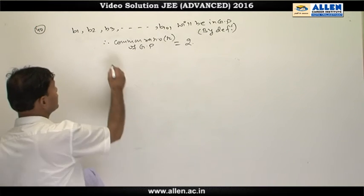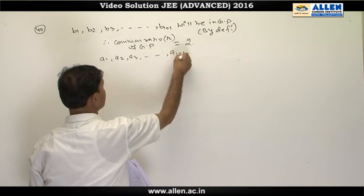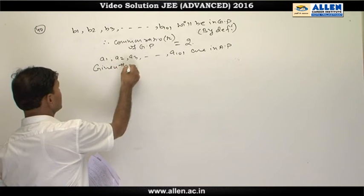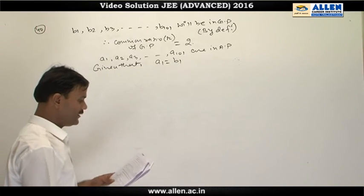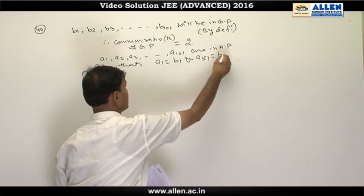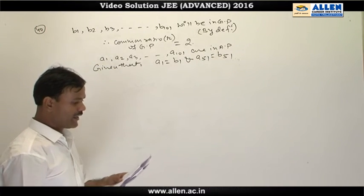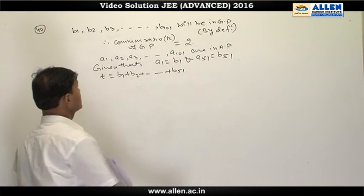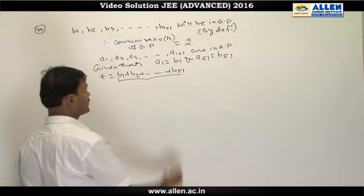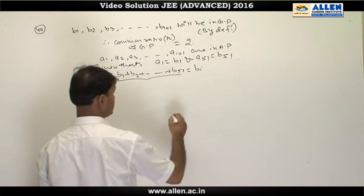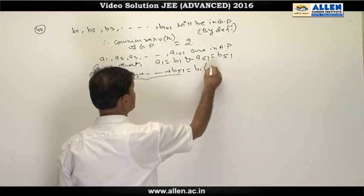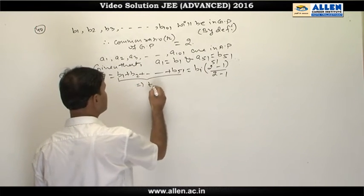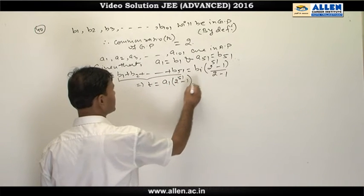We also have a1, a2, …, a101 in AP, where the first term of this AP equals the first term of the GP (a1 = b1), and the 51st term of the AP equals the 51st term of the GP. We need to find T, the sum of the first 51 terms of the GP. Since the common ratio is 2, T = b1·(2^51 − 1)/(2−1) = a1·(2^51 − 1).